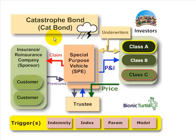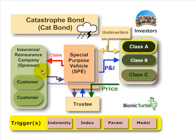David Harper of Bonnet Turtle with a brief tutorial on catastrophe bonds or CAT bonds for the FRM candidate. CAT bonds are classified alongside CAT options and other derivatives that are used to hedge operational risk. The sponsor, shown in light green, is typically an insurance or reinsurance company seeking to reinsure against catastrophic events like hurricanes or floods that typically occur with low frequency but very high severity in terms of economic consequences.